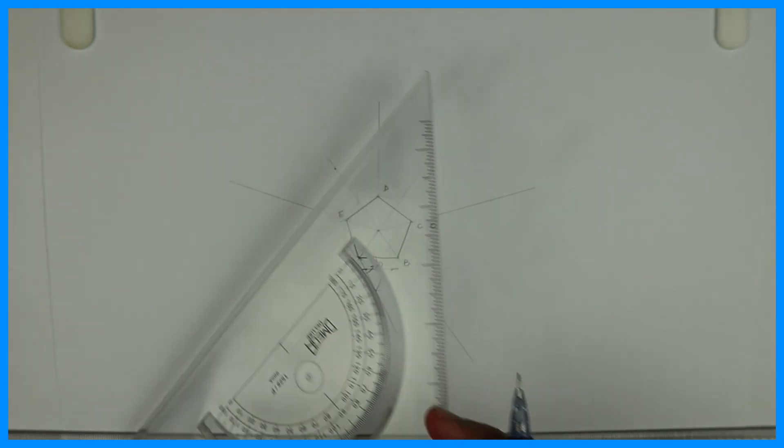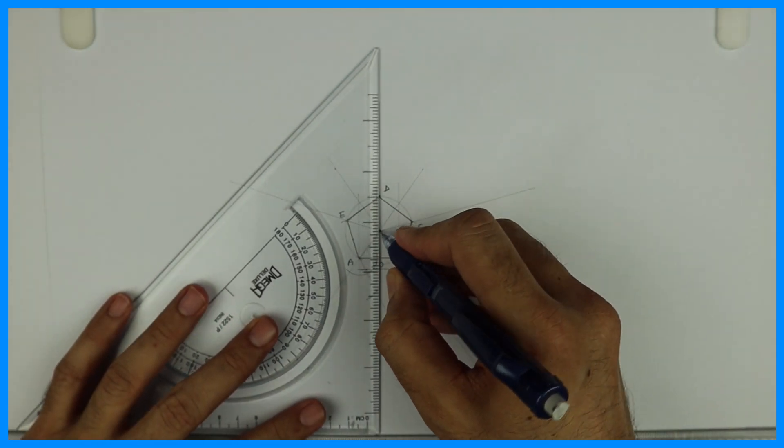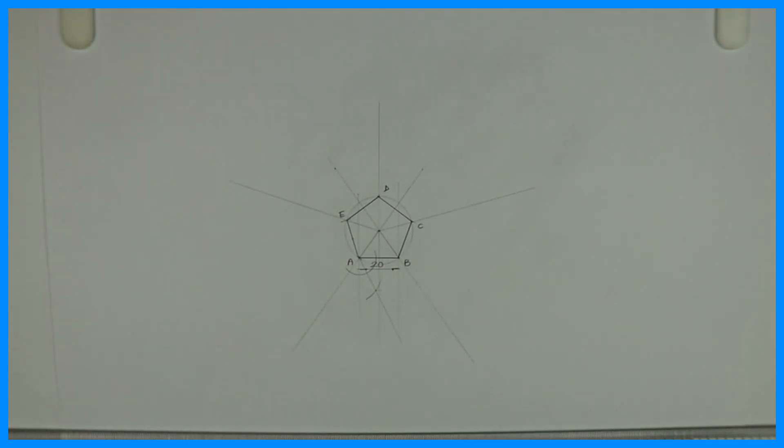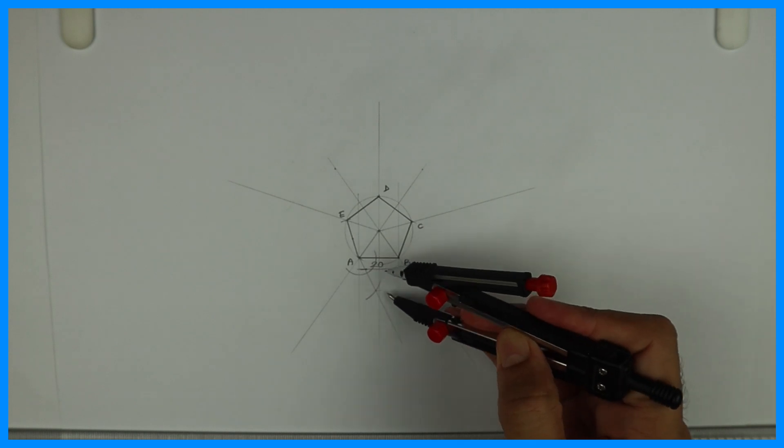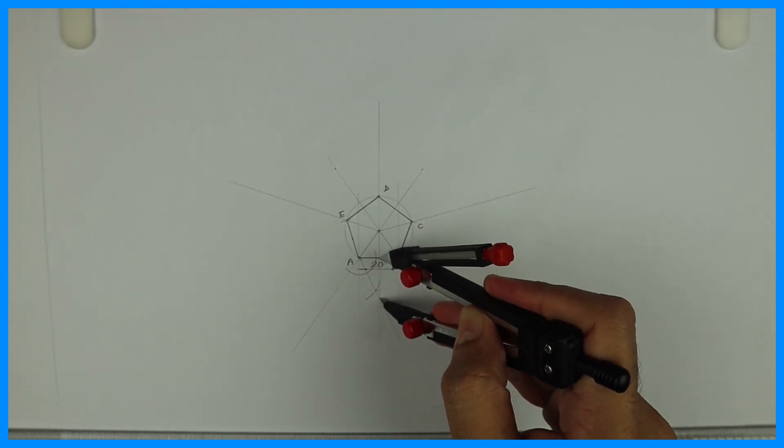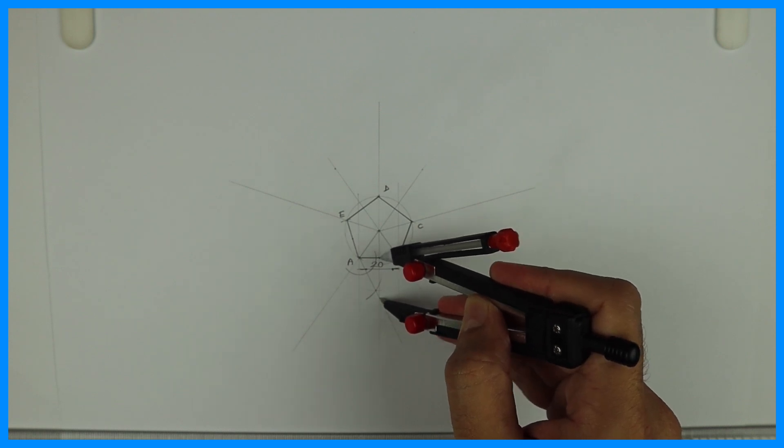angle A. Then you extend a line, take midpoint of AB and draw line. Wherever it will intersect with that bisector, that will be the point. From that point to the side you take radius and draw circle.